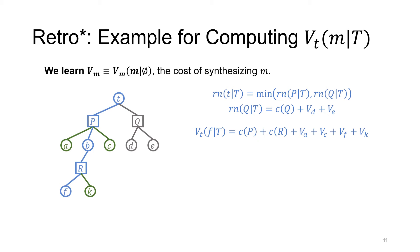If you're familiar with A-star algorithm, you will recognize that the first part, which is Cp plus Cr, actually corresponds to the g function in the A-star algorithm, which means the minimum distance within the current search tree. And then the second part corresponds to the h function, which means the future estimated cost to go. Therefore, our Vt(m|T) shares exactly the same form as the A-star algorithm.